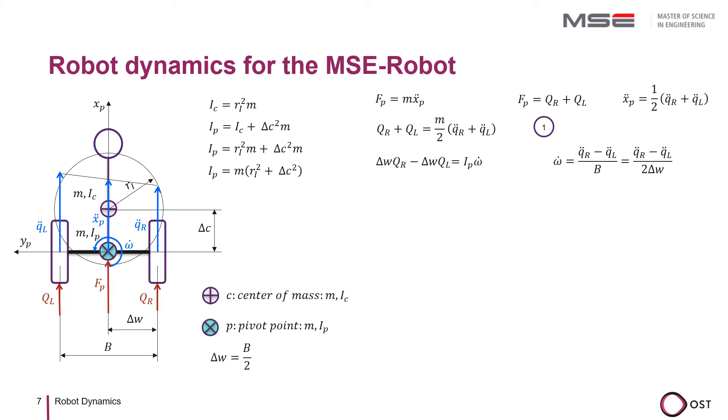The rotational acceleration is the difference between the wheel accelerations divided by the wheel distance, which in our case is 2 times delta W. By inserting this equation, we obtain another relationship between wheel accelerations and wheel forces.